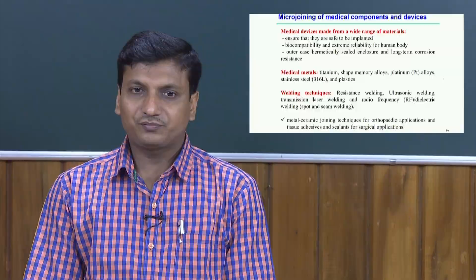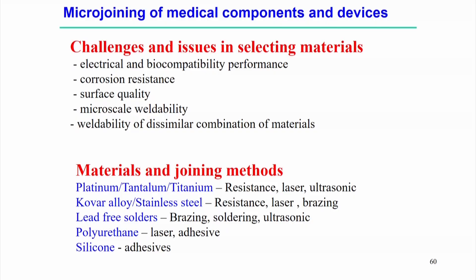What are the typical challenges and issues in selecting materials for the micro joining of medical components and devices? First, bio-compatibility performance as well as electrical conductivity is sometimes required. Corrosion resistance and surface quality or surface finish should be very high even after welding, and micro-scale weldability of materials — most importantly the weldability of dissimilar combinations of materials — brings different challenges in micro joining applications.